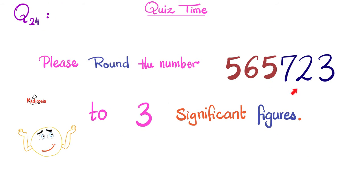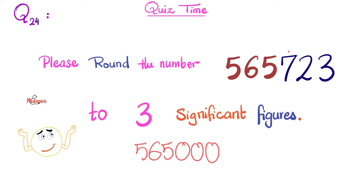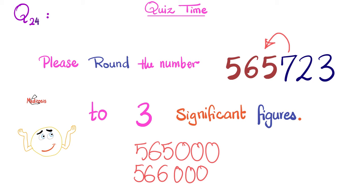Try this question: round this number to three significant figures. The doofus writes 565,000 again — but look at the digit that was ignored: it's a 7. Five and up, you round up. Since 7 is larger than 5, you round up. You write 5, 6, and not 5 but you round the 5 upward — it becomes 566,000. That's how you do it.